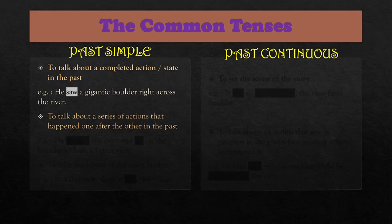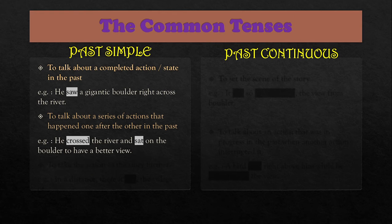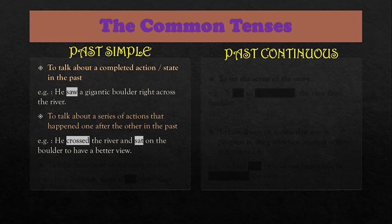The next function of past simple is to talk about a series of actions that happened one after the other in the past. For example: 'He crossed the river and sat on the boulder to have a better view.' — dia menyeberangi sungai dan duduk di atas batu tersebut untuk melihat pemandangan yang lebih jelas.